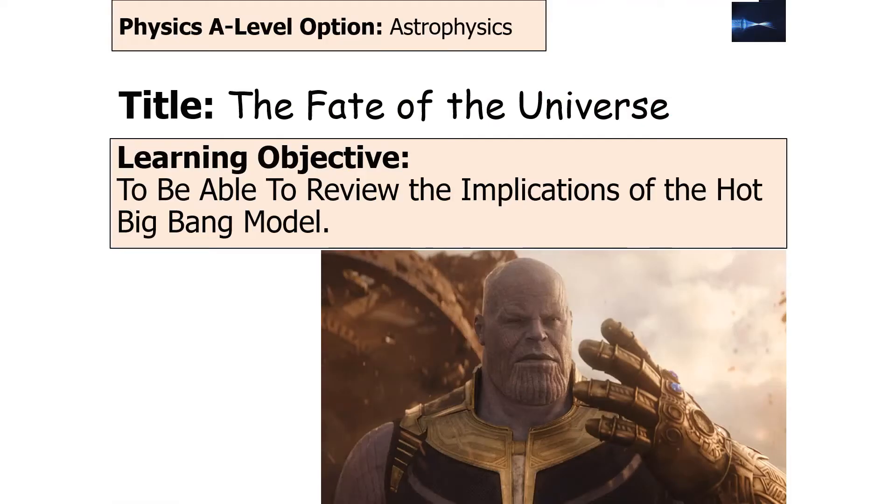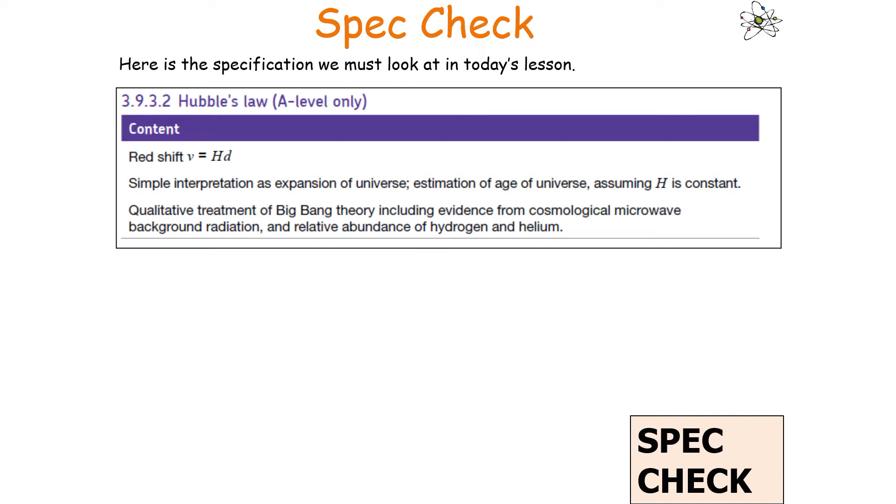So in today's lesson we're going to review the implications of the hot Big Bang model, which links into the following part of the AQA A-level astrophysics section in the physics course, where we're going to look at 3.9.3.2 Hubble's law.